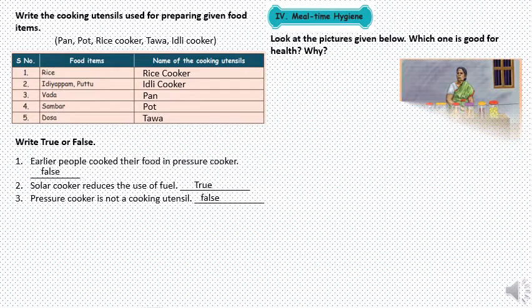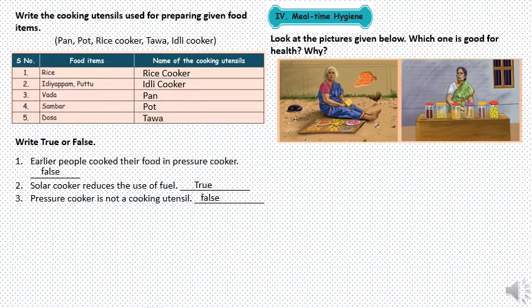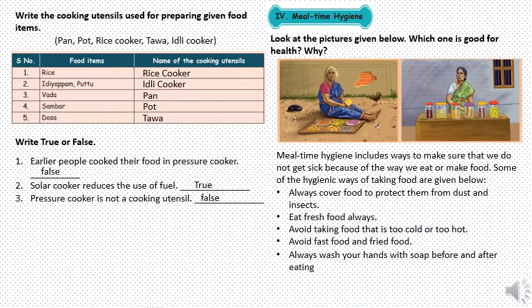Now let's look at the picture given below. Which one is good for health and why? In the first picture we can see a woman selling things but they are kept open, attracting flies and insects. It is not good for our health because food kept open can cause many diseases. In the next picture, all the food items are closed in a container — that is the better way of selling food items.